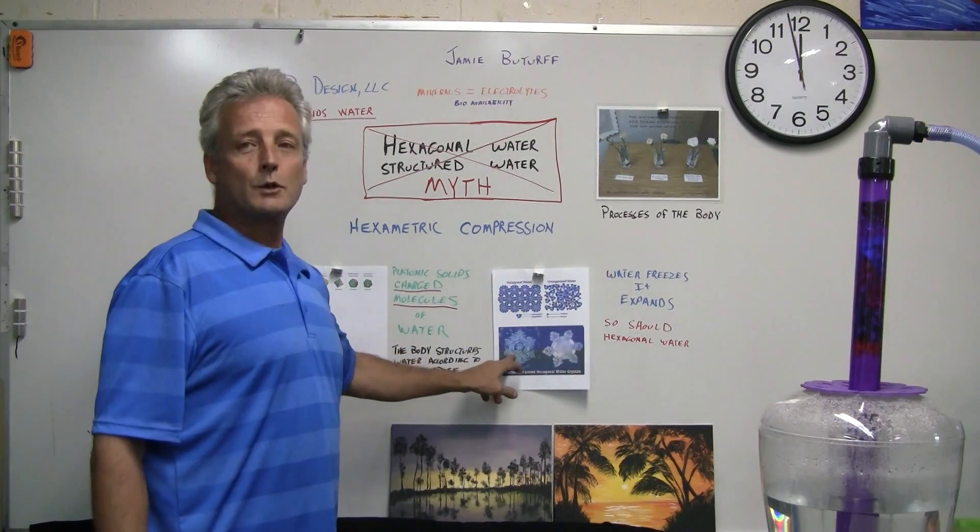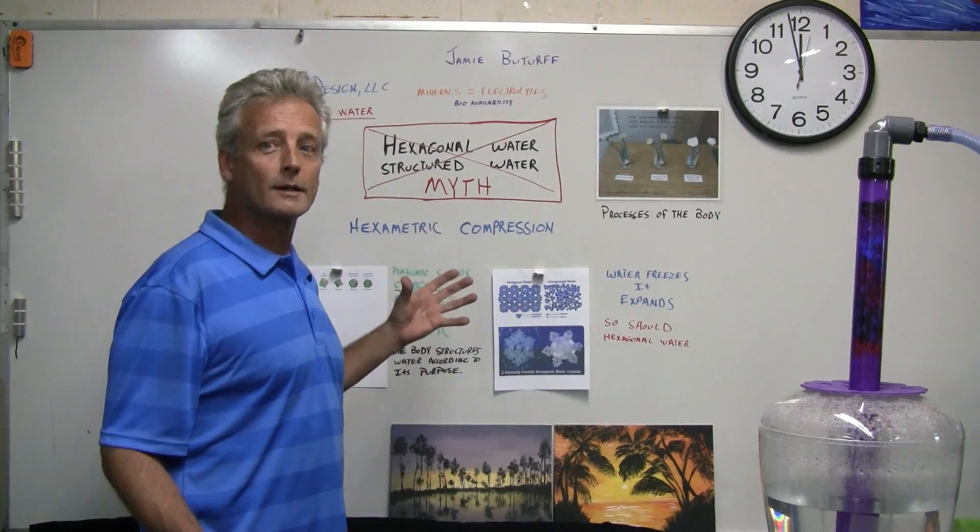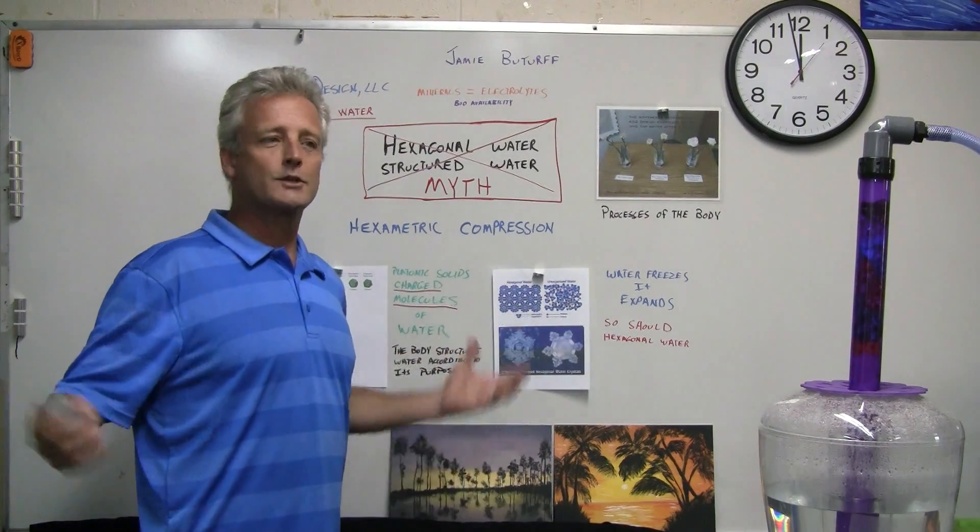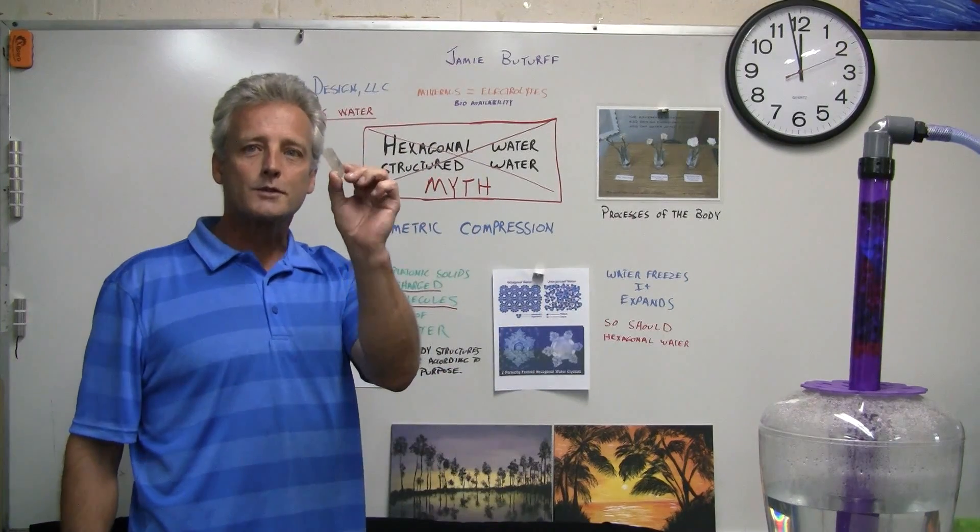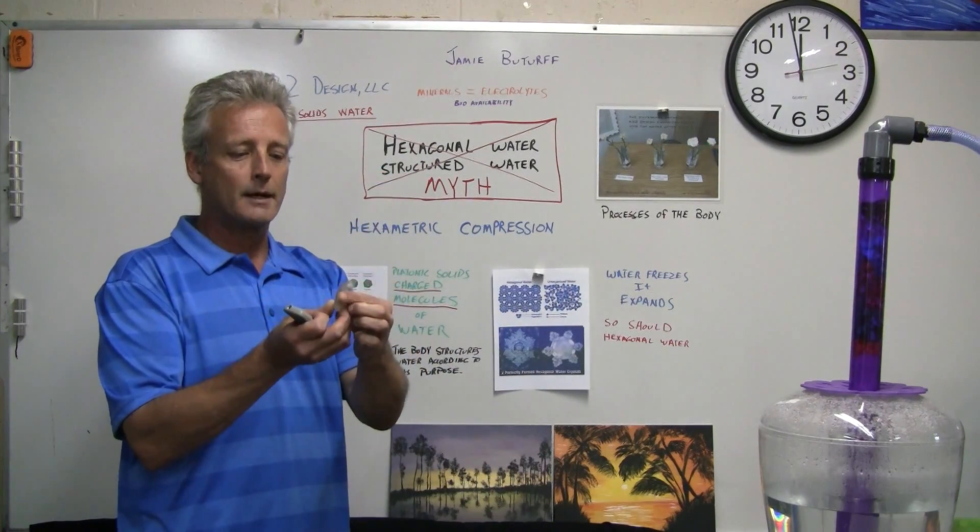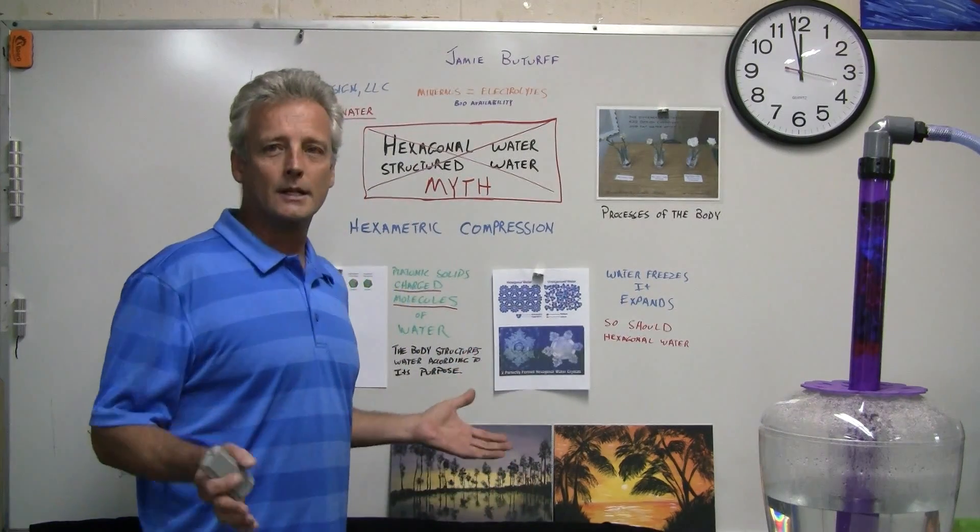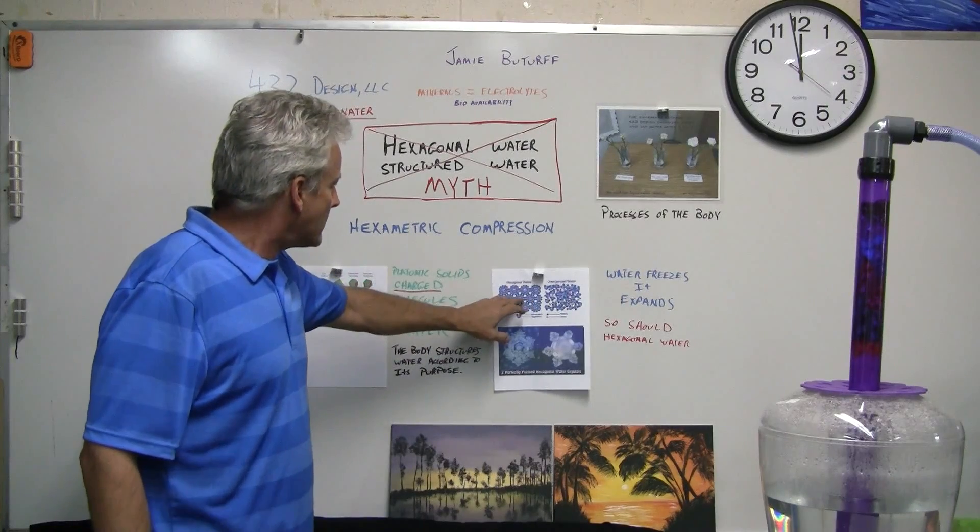One of the things that they do when they try to explain how liquid water can be structured, they show these ice crystals. They show ice, they show a solid. Sure, even a crystal, like a quartz crystal, forms a hexagonal shape, but it's not a true hexagon in a sense. It's in sheets, and it's a solid.